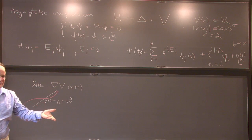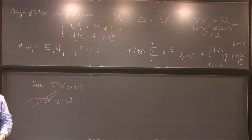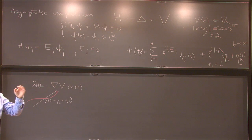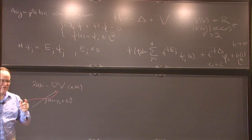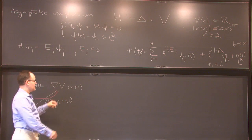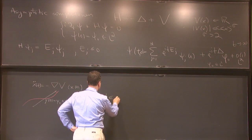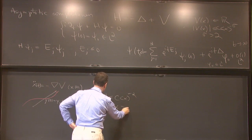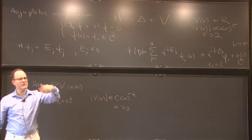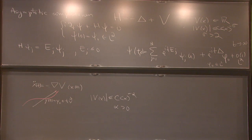They make some microlocal connection between the classical picture and the quantum picture — these Isozaki-Kitada parametrices. It's this microlocal wave, but they are mostly concerned with long range, meaning V(x) decays like |x|^{-α} for α > 0, with derivative gains like a symbol class. Derezinski-Gérard is from around 2000. That's a nice reference for all of this.